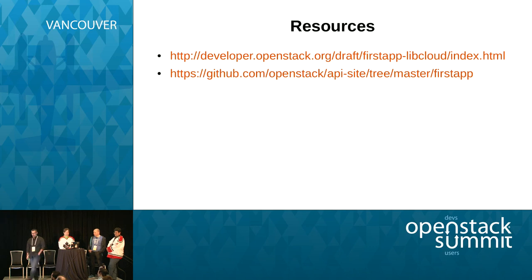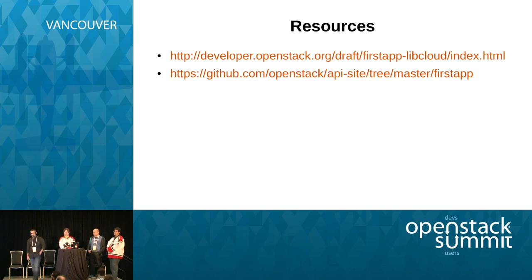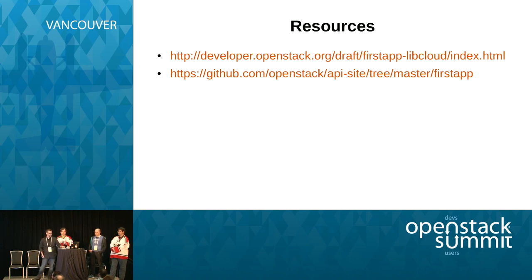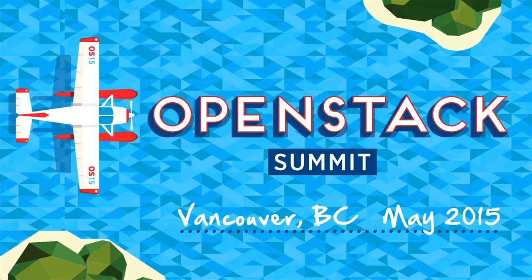Resources: this document is available in draft form at the API site guide. On GitHub, it's part of the OpenStack slash API site repo, and it's called FirstApp. If you generally Google for FirstApp, you should find it. Thank you.